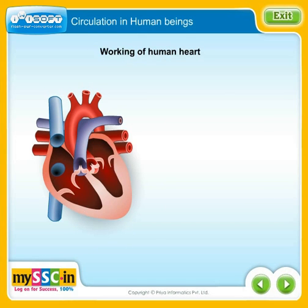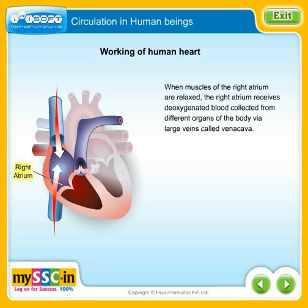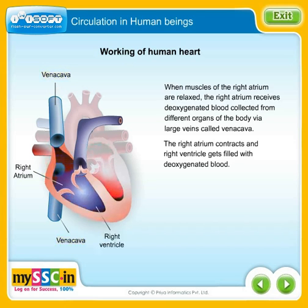When the muscles of the right atrium are relaxed, the right atrium receives deoxygenated blood collected from different organs of the body via large veins called Vena Cava. The right atrium contracts and the right ventricle gets filled with deoxygenated blood.